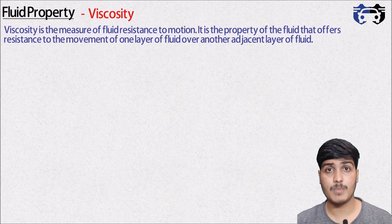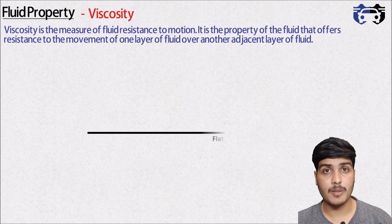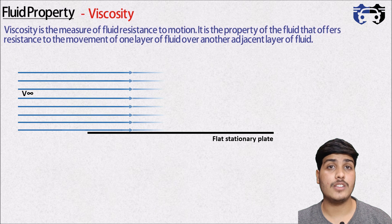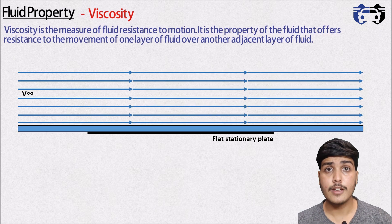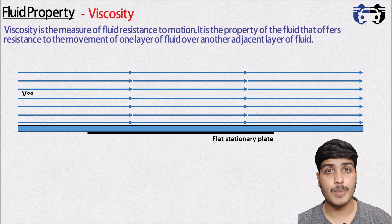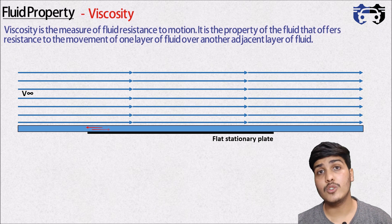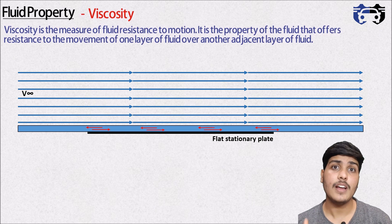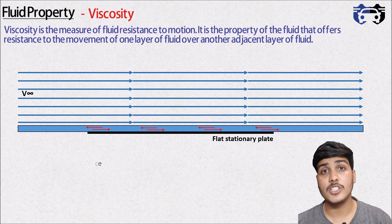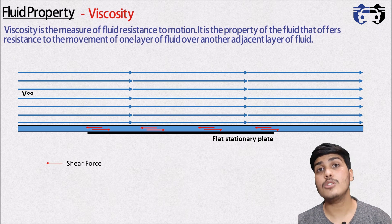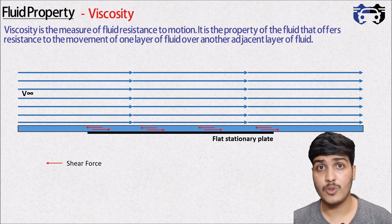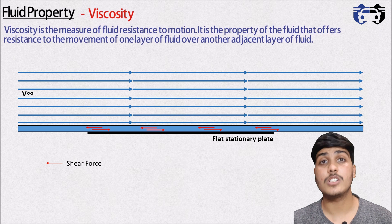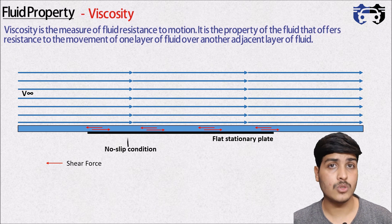Let's understand this with an example. Here we are having a flat stationary plate and the fluid is flowing at constant velocity v-infinite. Now let's focus on the bottom most layer which is adjacent to the stationary plate. An adhesive friction force will act between the stationary plate and the fluid particles. This force is called the shear force and it will try to slow down the moving fluid particles. As adhesive forces are greater than the cohesive forces here, so the bottom most layer will come at rest and there will be a no slip condition.